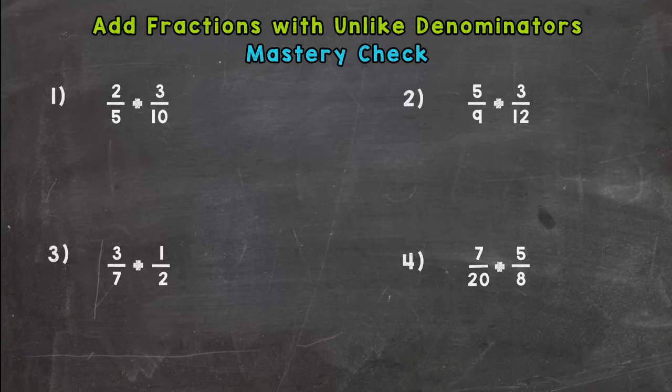So that's how the mastery check goes. And your goal is to have three out of the four correct or four out of the four correct. So if you're ready to roll here, go ahead and press pause.